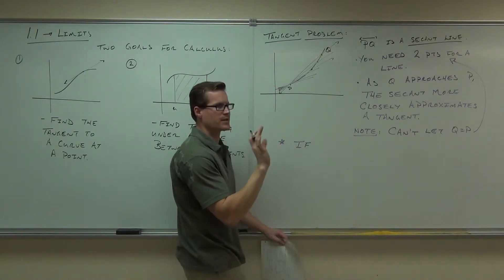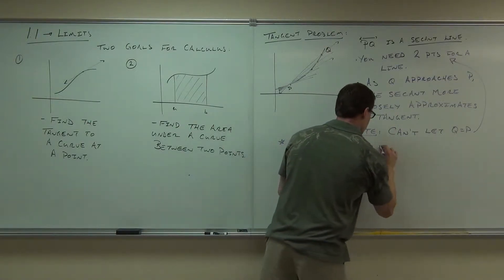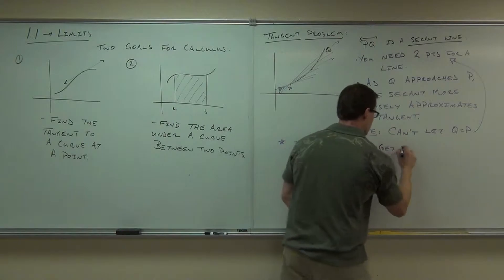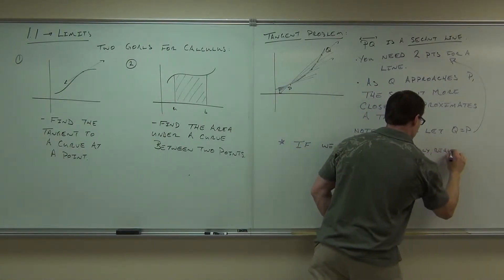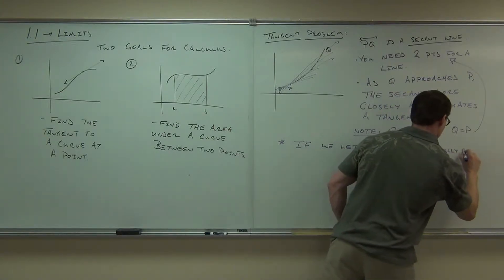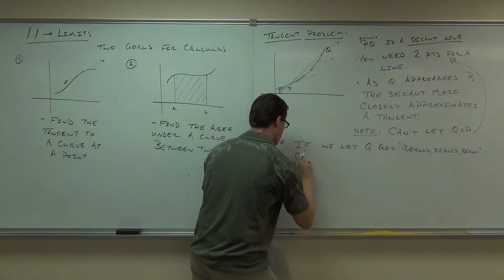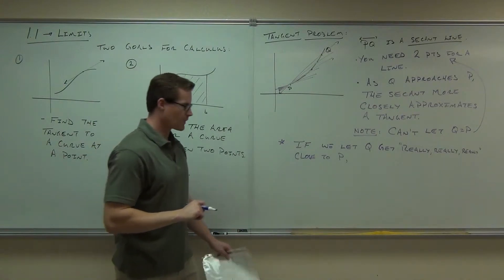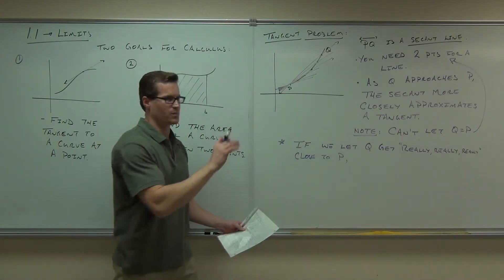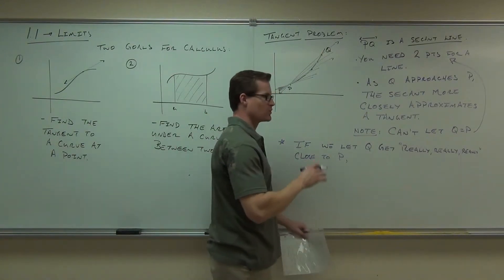Or approximate it so closely that it doesn't matter. Really, really, really. If we let Q get really, really close to P, I'll use a better word, a more mapping word for that in just a minute. Really, really close to P, the secant will be identical to the tangent.